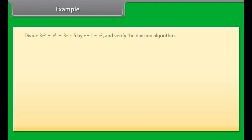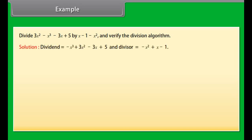Now let's write the actual answer: (5x³ − x² + 6) ÷ (x − 4) = 5x² + 19x + 76 + 310/(x − 4). We can verify the answer using: divisor × quotient + remainder = dividend.